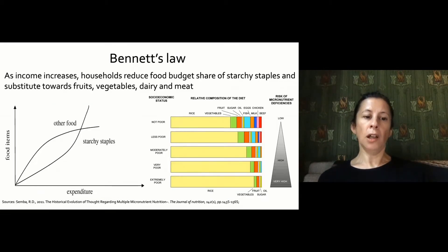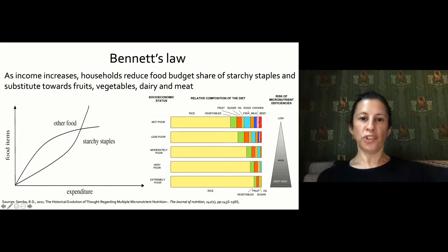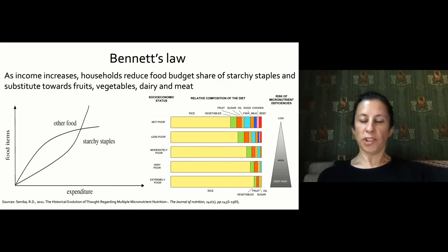The other law is Bennett's Law: as incomes increase, households reduce their food budget share of starchy staples and substitute toward luxury and perishable foods — fruits, vegetables, dairy, meat, dessert, sugar, and oils. People spend less on food overall, and if they do spend on food, they have a more diverse food basket. The extremely poor spend most of their income on their staple grain like rice, but as wealth increases, dietary diversity increases and risks of micronutrient deficiencies decline.